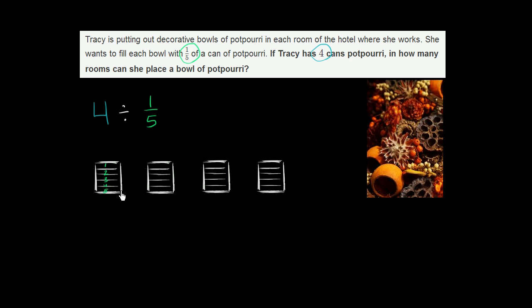Well, she's got four cans. So this is going to be equal to, let me do this in the right color, she has four cans. And then for each of those cans, she can fill five bowls of potpourri, because each bowl only requires a fifth of those cans.